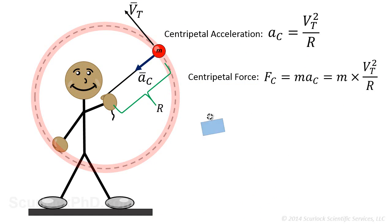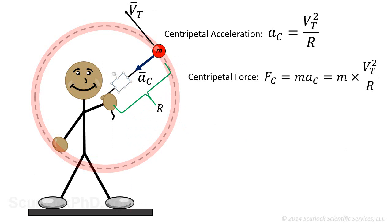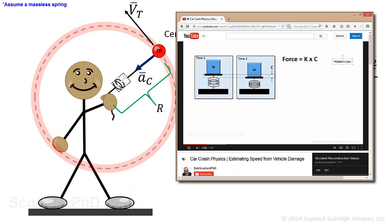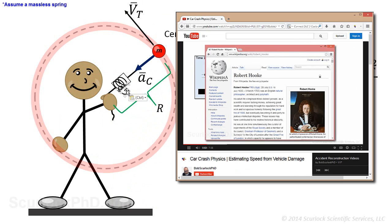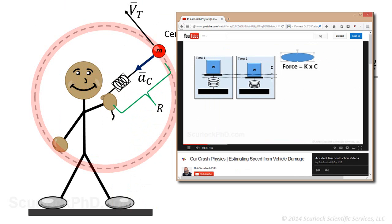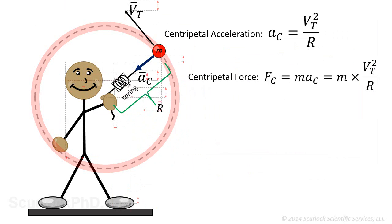Suppose our physicist has no way to know the magnitude of the centripetal force on the ball, but has an uncalibrated linear spring device handy, which allows him to measure the spring's change in length as he whirls the ball around. From Hooke's Law, we know that the force on the ball is proportional to the spring's change in length.